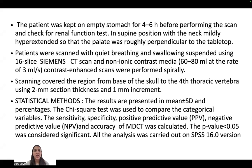The patient was placed in supine position with the neck mildly hyperextended so that the palate was roughly perpendicular to the tabletop. The patient was scanned with quiet breathing and swallowing suspended using a 16-slice CT scanner and non-ionic contrast media. Contrast enhanced scans were performed spirally, covering the region from the base of the skull to the fourth thoracic vertebra using 2 mm section thickness and 1 mm increment. Results are presented in mean, standard deviation, and percentage. The chi-square test was used to compare categorical variables. Sensitivity, specificity, positive predictive value, negative predictive value, and accuracy of MDCT were calculated. A p-value less than 0.05 was considered significant. All analyses were carried out on SPSS version 16.